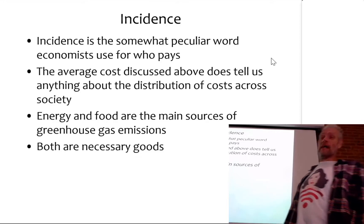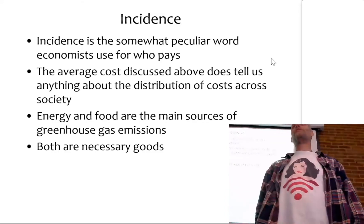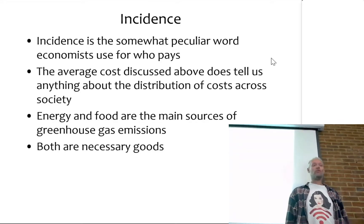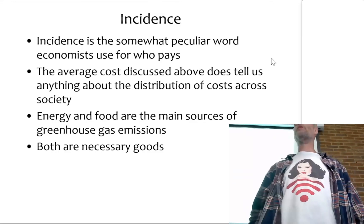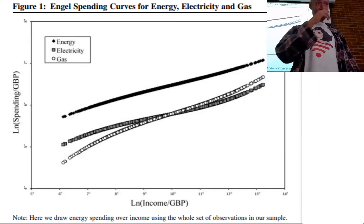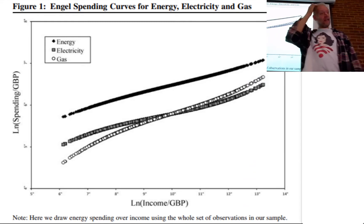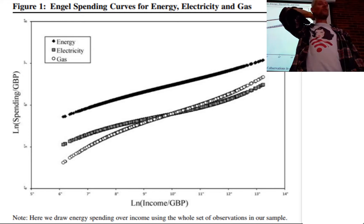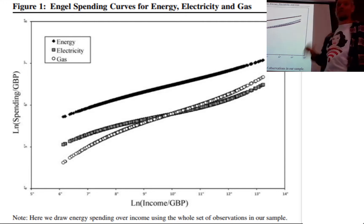You may think this is relatively straightforward. When we talked about where emissions come from - energy use, agriculture - both are necessary goods. So you would think it's the poor who would pay disproportionately for climate policy. What you're looking at here are the so-called Engel spending curves, which tell you how much people are paying as a share of their income towards electricity and other forms of energy.